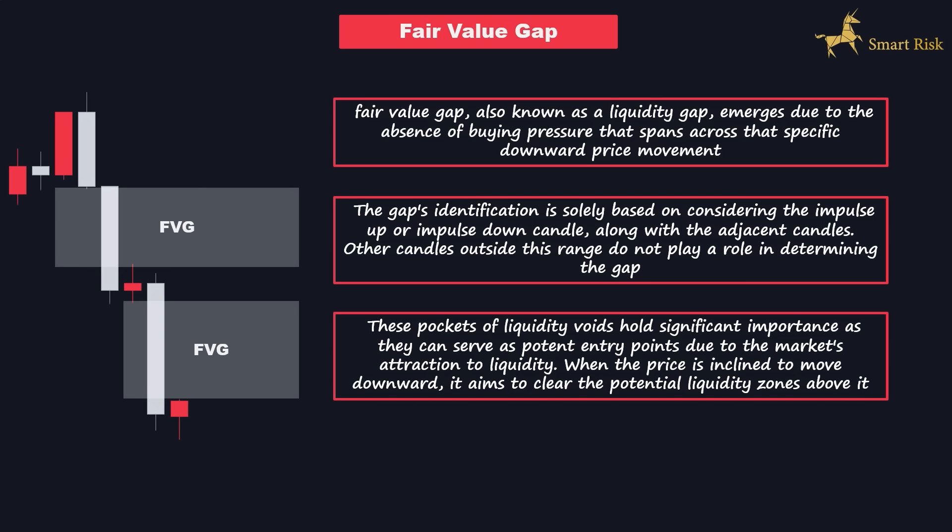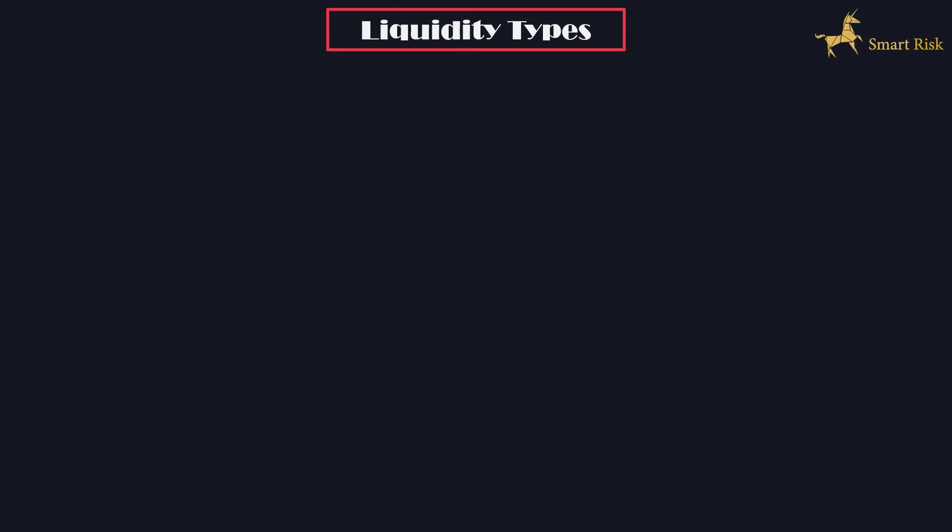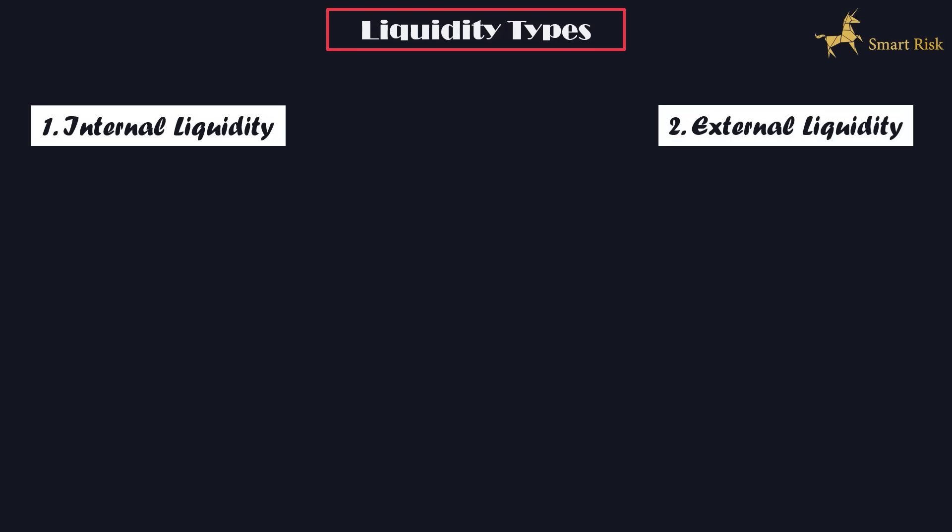Before diving into the details of these topics, it's important to note a crucial step in your trading journey: backtesting your strategies. Before using a strategy or setup in a real account, it's recommended to backtest it at least 100 times. Various factors like market conditions, trader psychology, sessions, risk management, and time frame influence a strategy's win rate. Now, when it comes to liquidity, we categorize it into two types: internal and external liquidity.